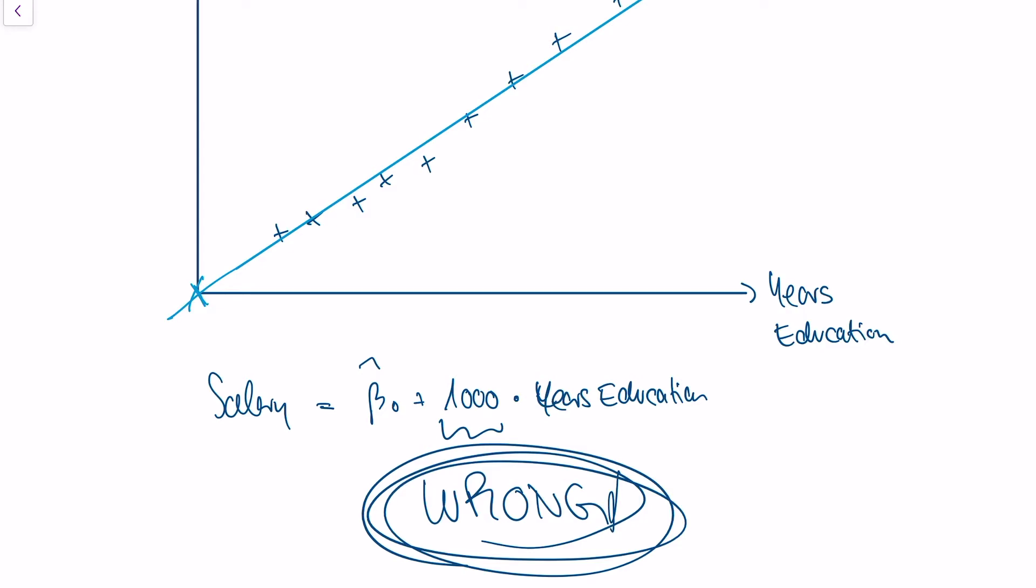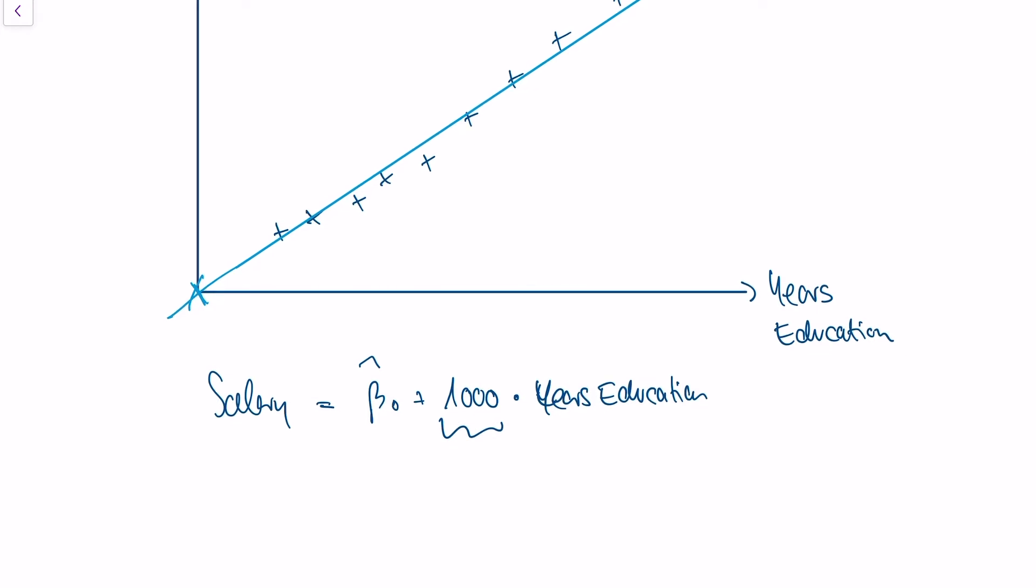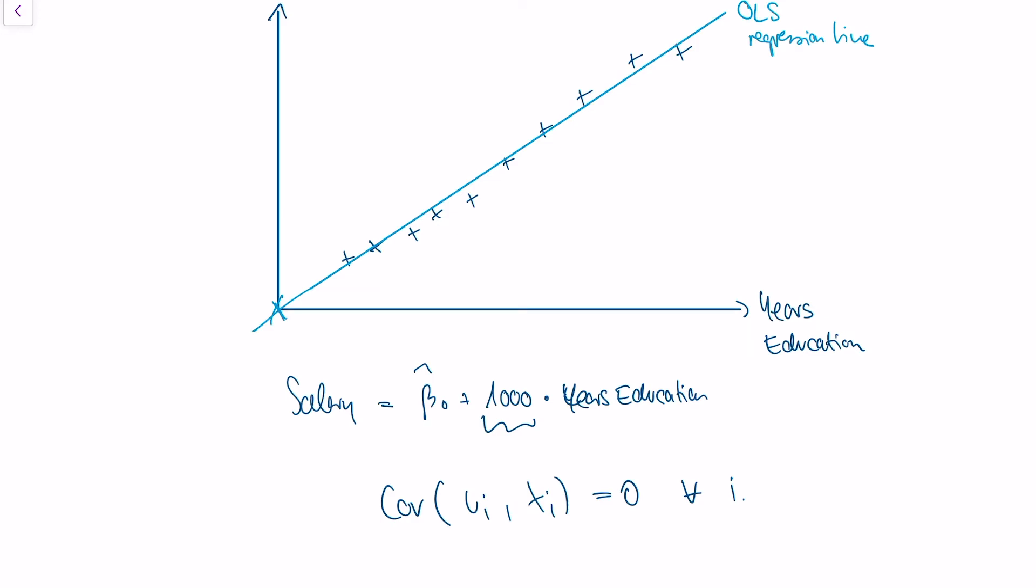And the reason is that our estimator in this case is biased. The formal definition that we need for unbiasedness is that the covariance of our error term with the regressor is zero at all times, for all i.